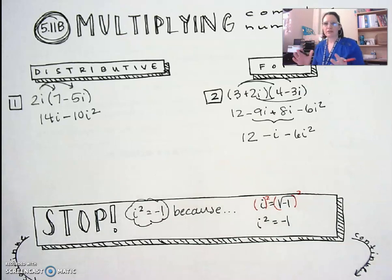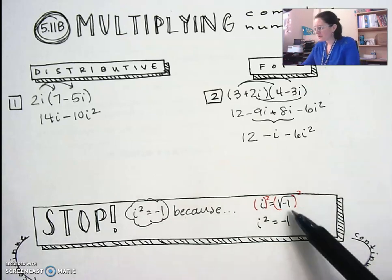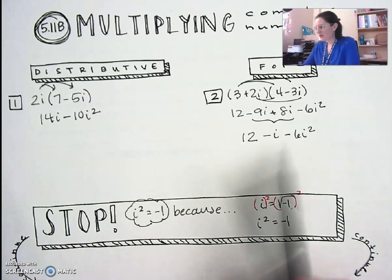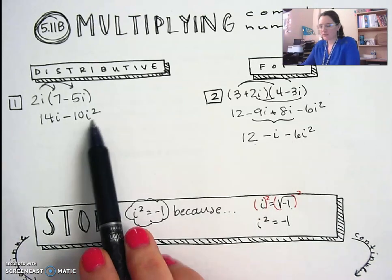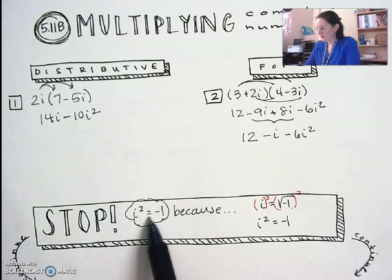Those are just like two sides of the same coin. We use yesterday's property when we're simplifying radicals or square roots with negatives. And we use today's property when we're simplifying expressions that have i squared. So since i squared equals negative 1, they are replaceable and I can substitute one for the other.